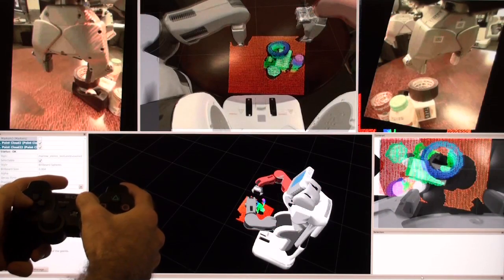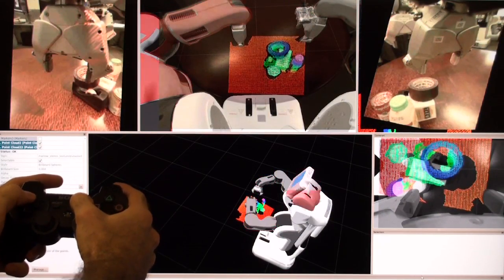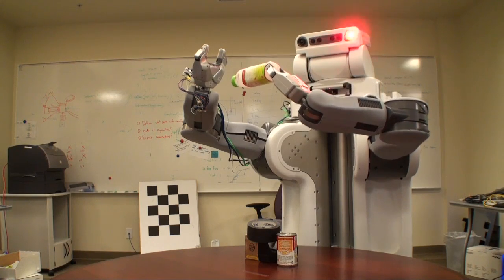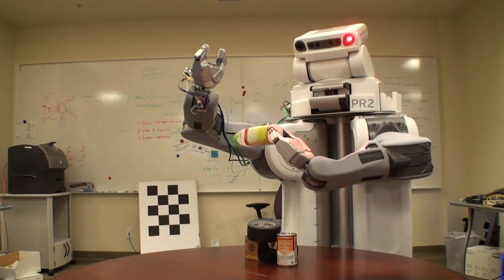This work motivated the development of a full body teleoperation interface for PR2. Using a joystick, the user can control the head, arms, gripper, and base of the PR2 more easily and see multiple camera angles intuitively.